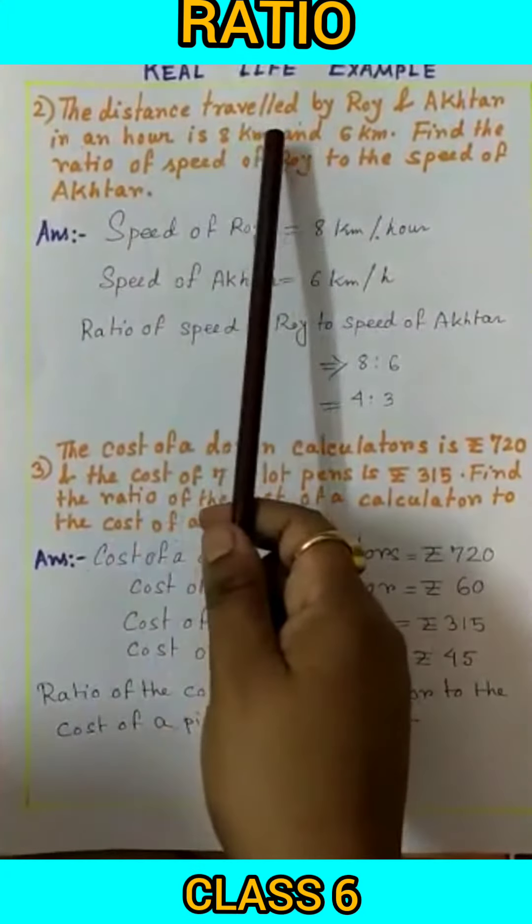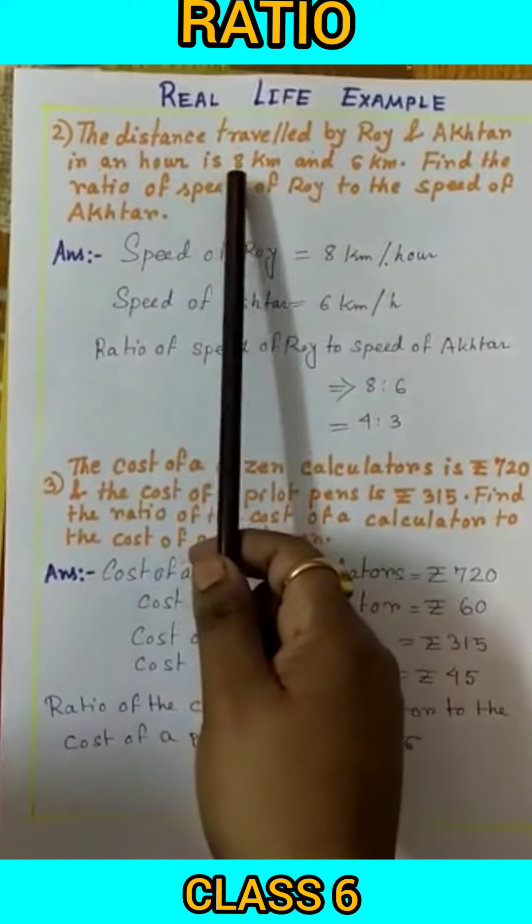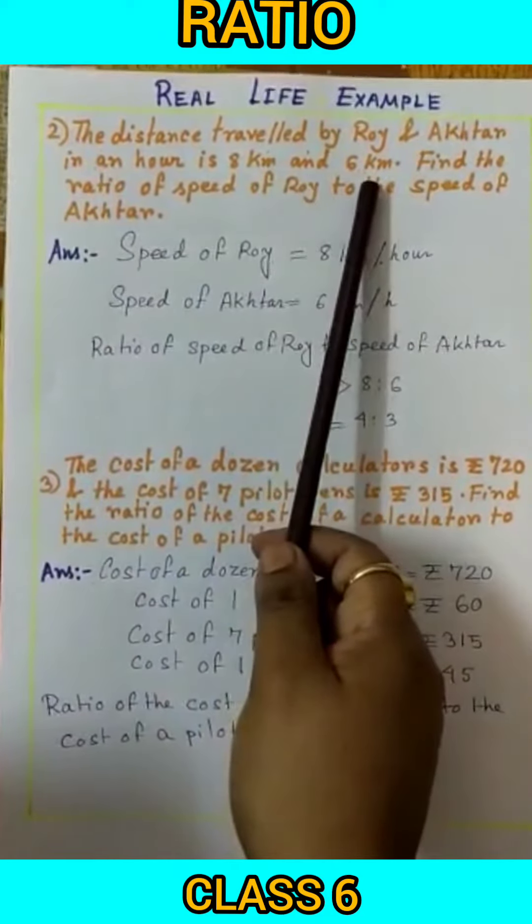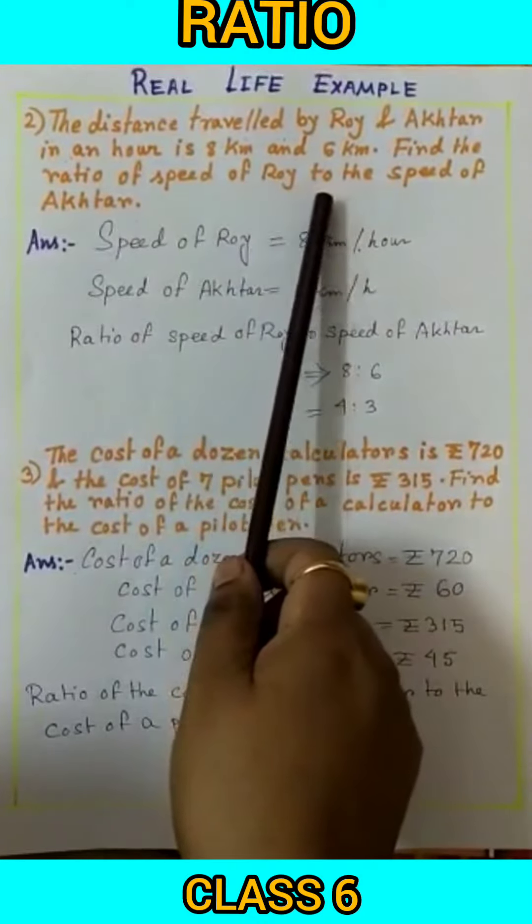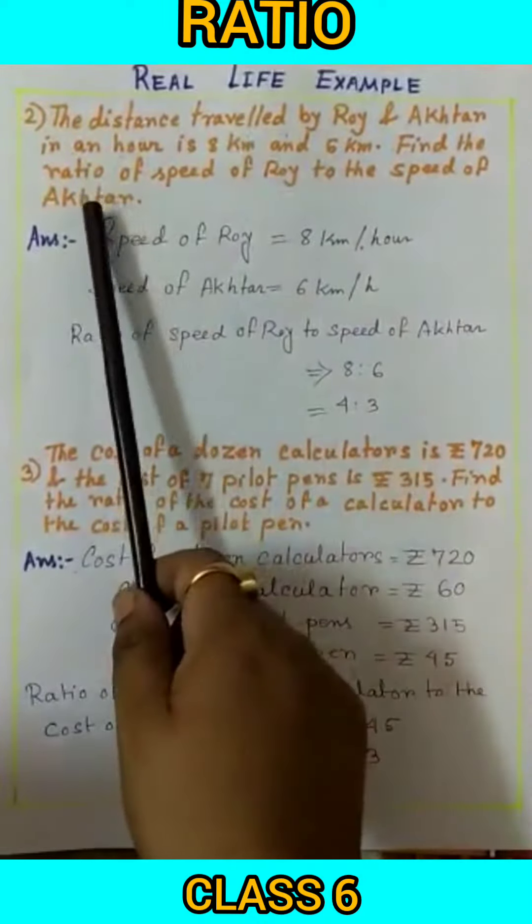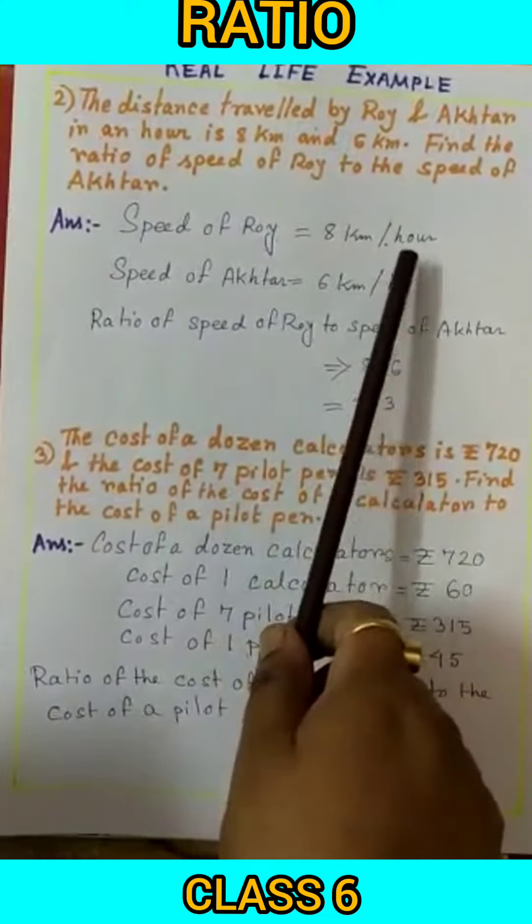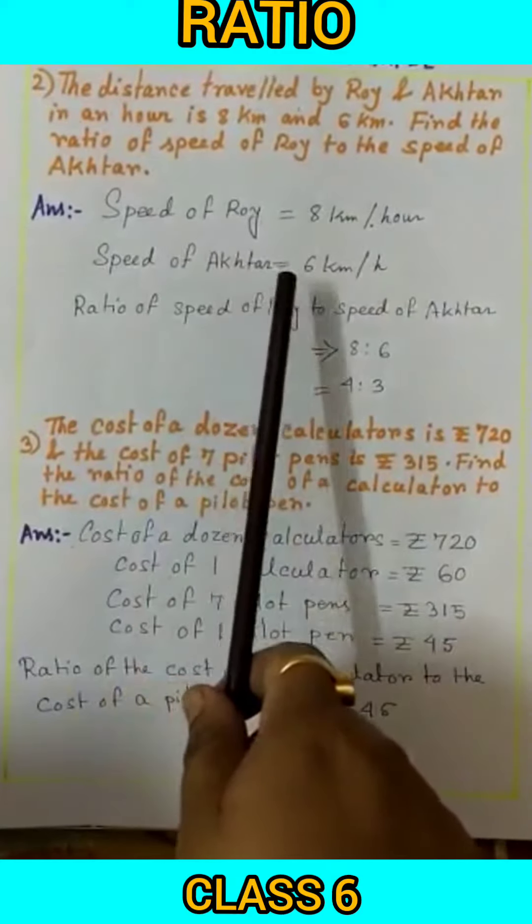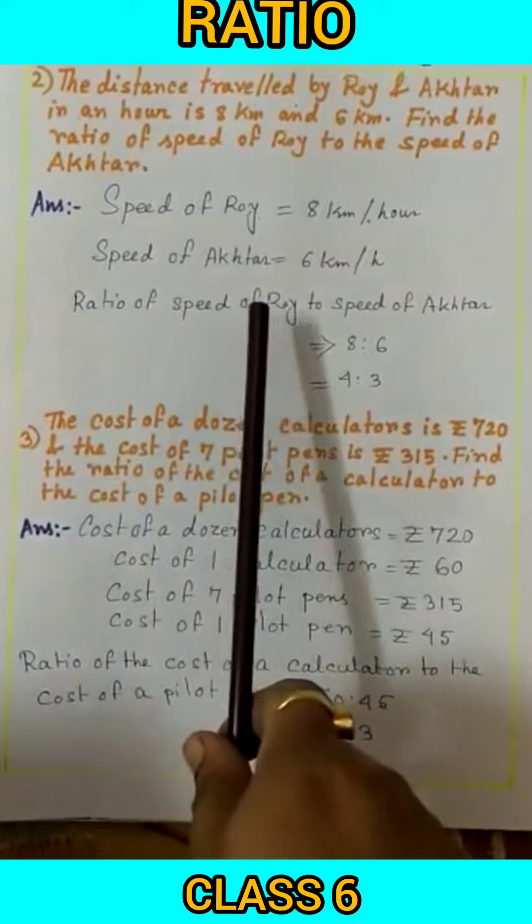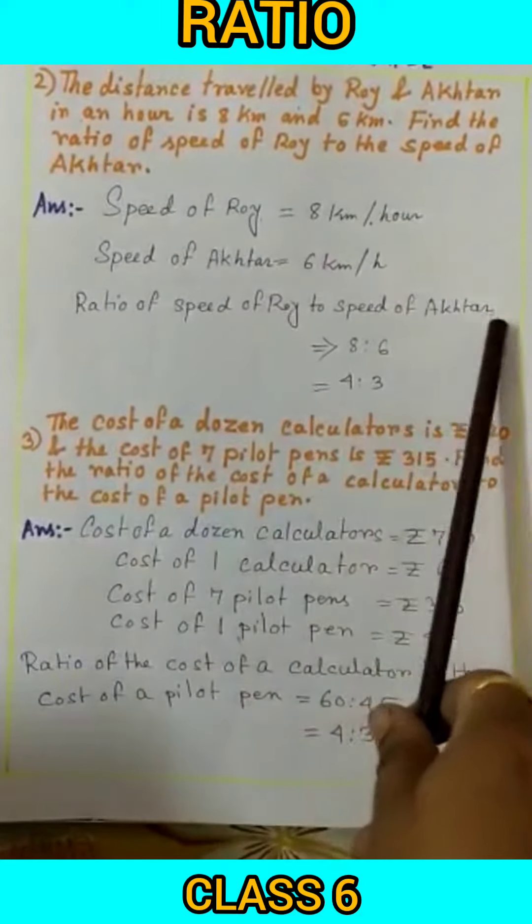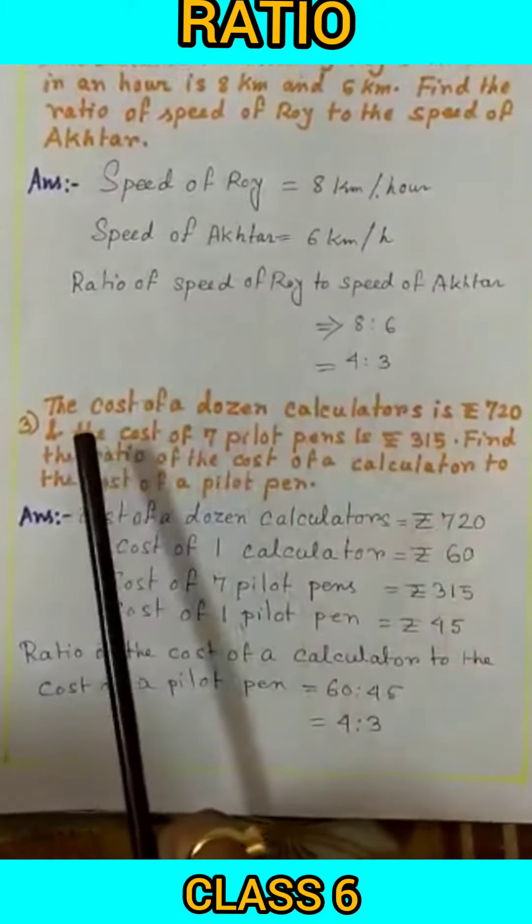The distance travelled by Roy and Akhtar in an hour is 8 km and 6 km. Find the ratio of speed of Roy to the speed of Akhtar. So here speed of Roy is 8 km per hour and speed of Akhtar that is 6 km per hour. Ratio of speed of Roy to speed of Akhtar is 8 to 6, that is 4 to 3.